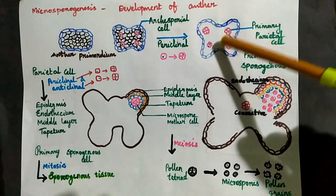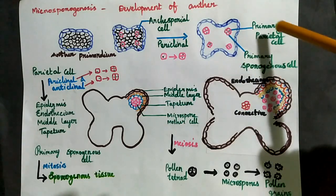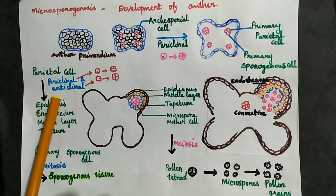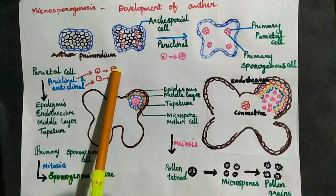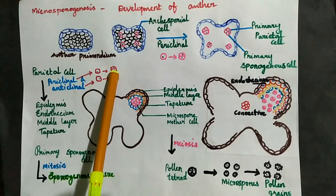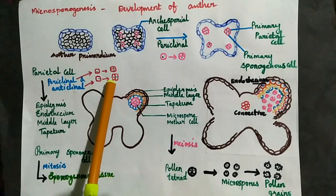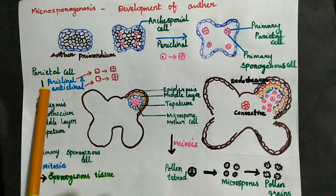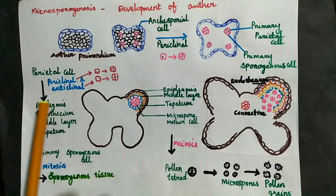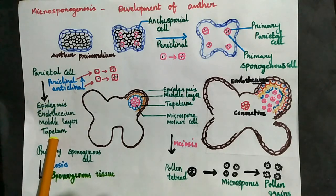The primary parietal cell then periclinally and anticlinally divides. Periclinal division is parallel to the surface, while anticlinal division is at right angles to each other — the cells divide in both directions to form the anther wall layers.